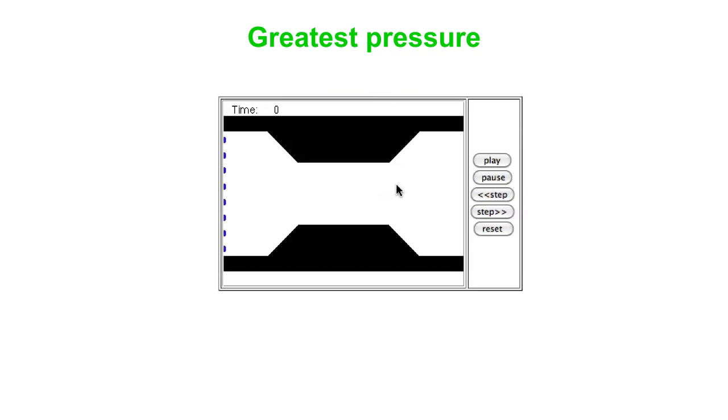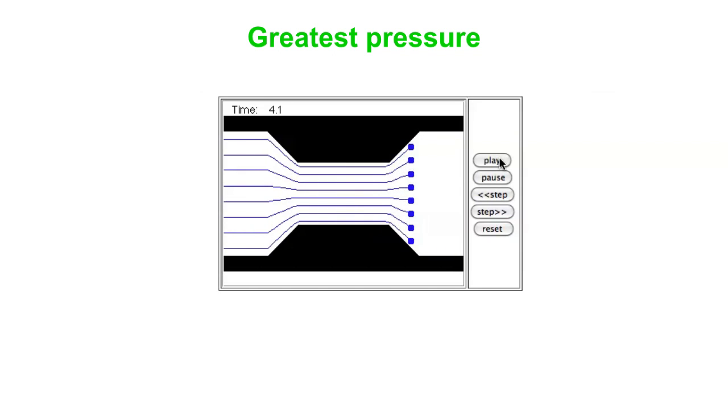So we'll look at a little simulation of this, animation of this. So you see the fluid going through the pipe. And what I hope you can see is that it starts off going fairly slowly and then goes up quite a bit faster through the narrow section and then slows down again as the pipe widens out on the right.